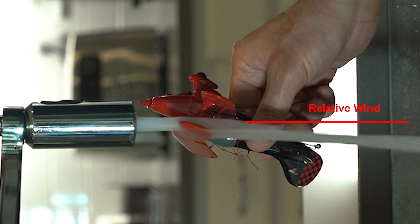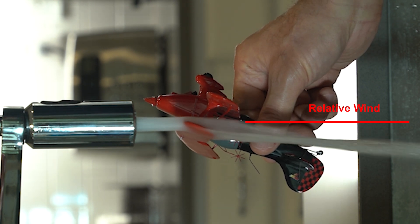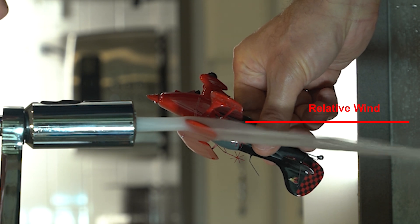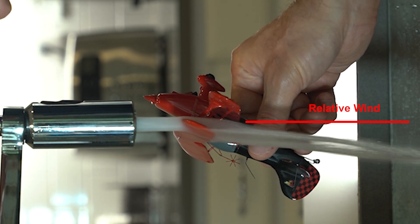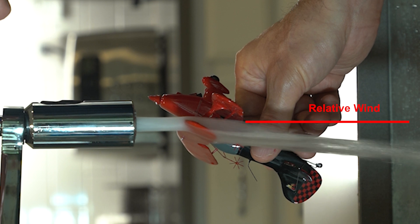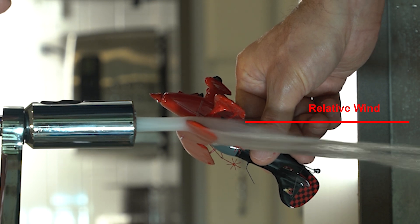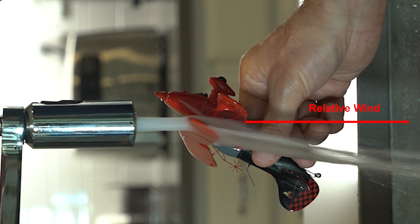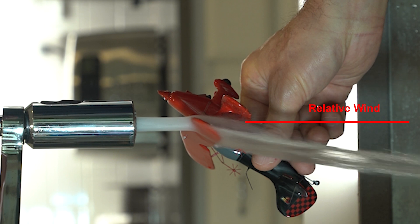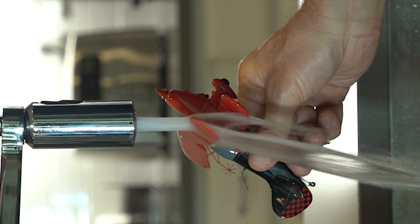Now let's keep increasing the angle of attack to the point where we reach a stall and you see the airflow moving quite a bit bending towards the ground until we reach the critical angle of attack and the flow can no longer stay stuck to the wing. We have separation and there's the stall.